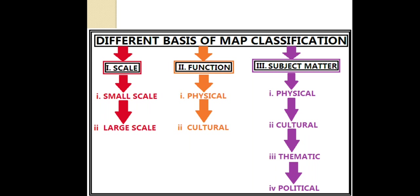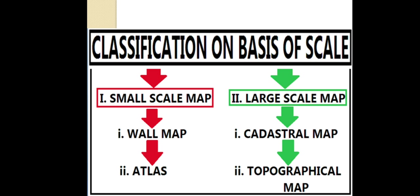Maps are of different types. Each map is unique in its design, content and construction. Maps can be classified on different bases: first on the basis of scale, second on the basis of functional aspect, and third on the basis of subject matter. Classification on the basis of scale is divided into two groups: small scale maps and large scale maps.